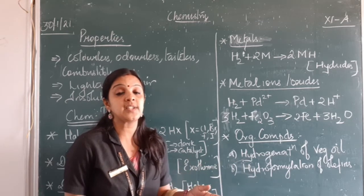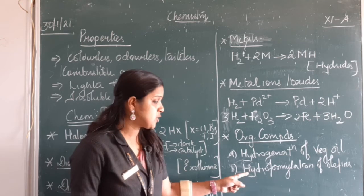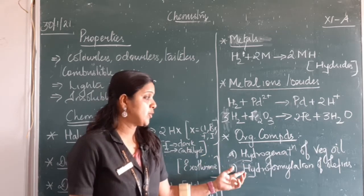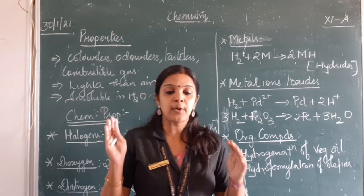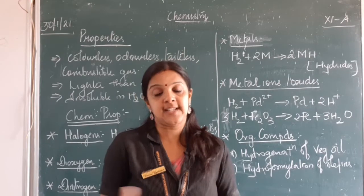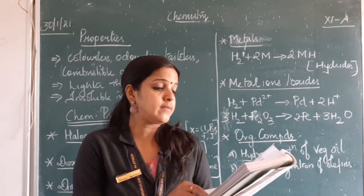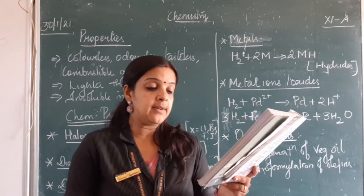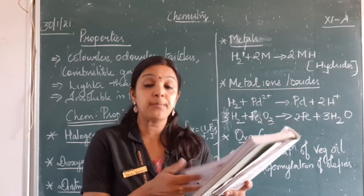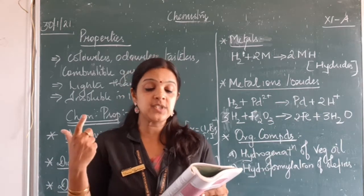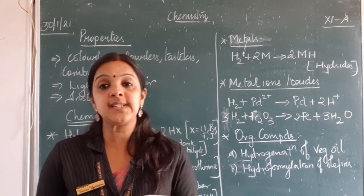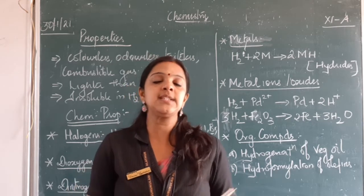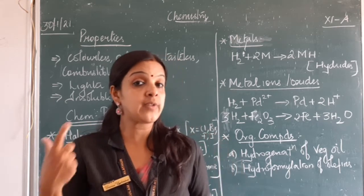Hydrogenation of vegetable oil: addition of hydrogen takes place in the presence of nickel as catalyst. Hydroformylation of olefins: olefins having a double bond will get converted to alcohol during the process of reacting with hydrogen. Those are the properties of hydrogen. The uses are given in your textbook — there are almost 8 uses: it is used in the manufacture of vanaspati ghee, in the preparation of methanol, in preparation of metal hydrides, and also for the preparation of hydrogen chloride.